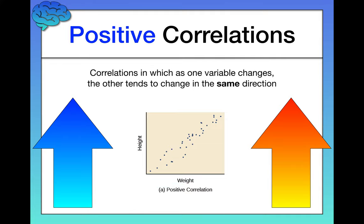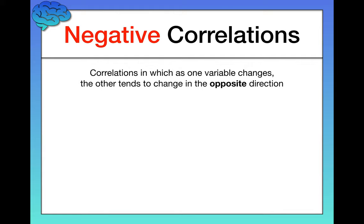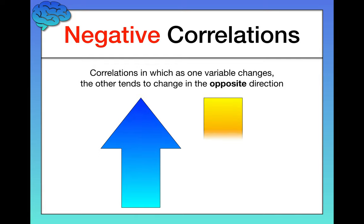All right, let's talk for a minute about negative correlations, because this is where I tend to see the most mistakes on exams and things like that, and just generally the most misunderstanding. Negative correlations are correlations in which as one variable changes, the other variable tends to change in the opposite direction. So here, the two variables are sort of working against each other indirectly in opposite directions.